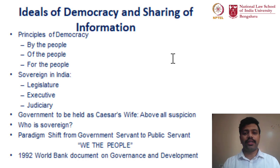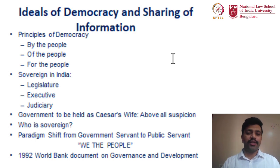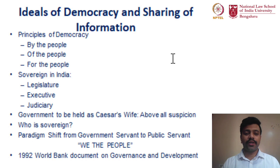The first line of the preamble to the constitution states: 'We the people of India.' It is pertinent that it is the people of India who are the real sovereign. This is evidenced by the paradigm shift from the pre-independence era, where those employed by the state were known as government servants, to today where they are referred to as public servants — clearly representing that it is the people of India who are the real, true sovereign.